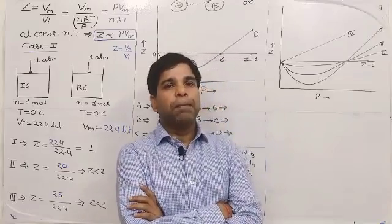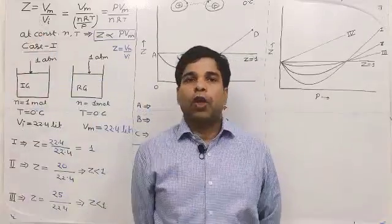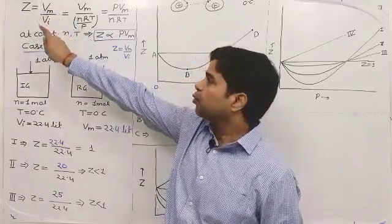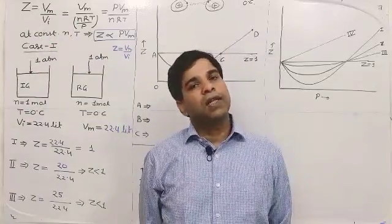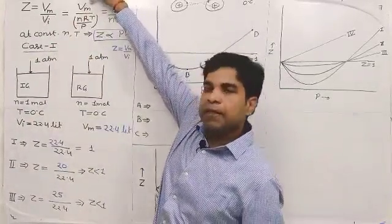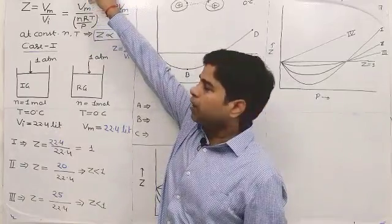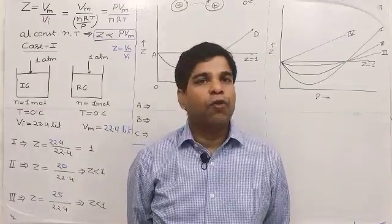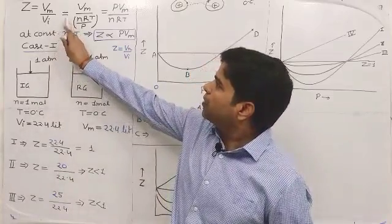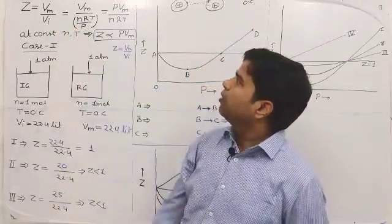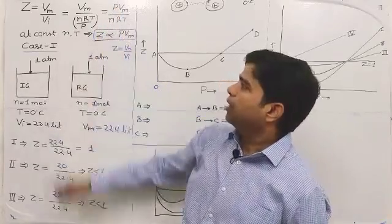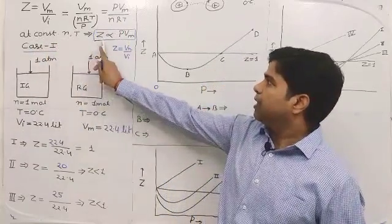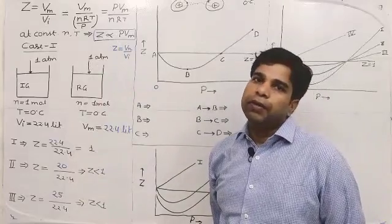The compression factor or compressibility factor is represented by capital Z. It is defined as the ratio of the molar volume of the real gas to the molar volume of the ideal gas. Vm is the molar volume of the real gas, and the ideal gas molar volume can be calculated from PV = nRT, giving volume = nRT/P. Substituting, Z becomes PVm divided by nRT. If we have constant number of moles and temperature, then Z is directly proportional to PVm.